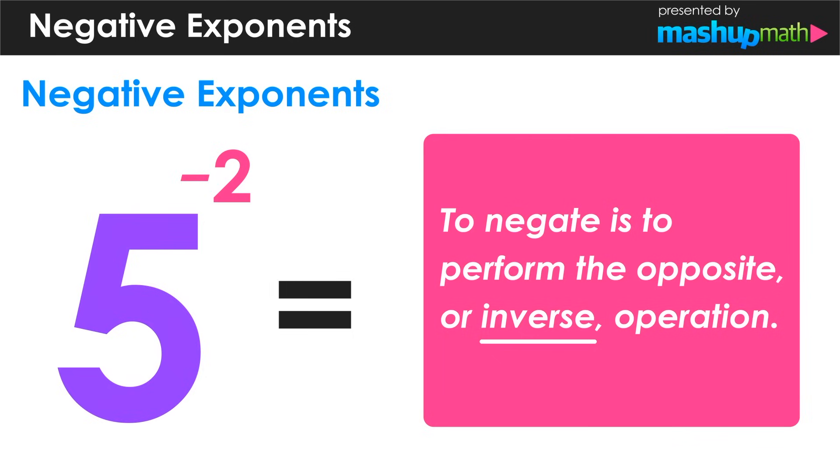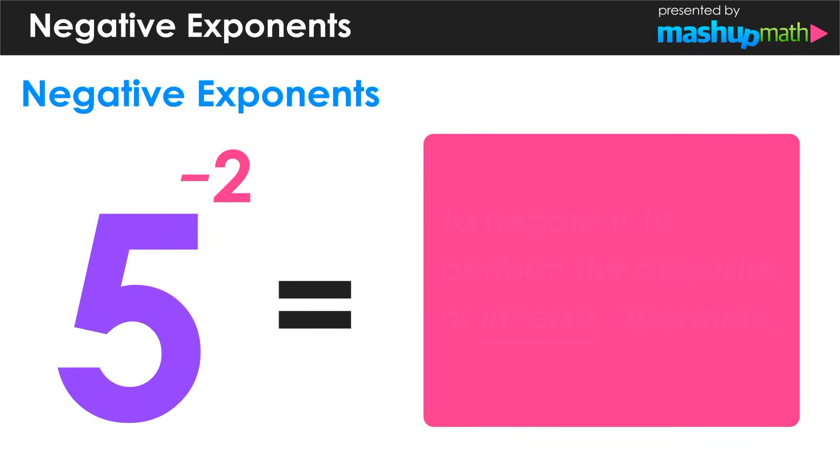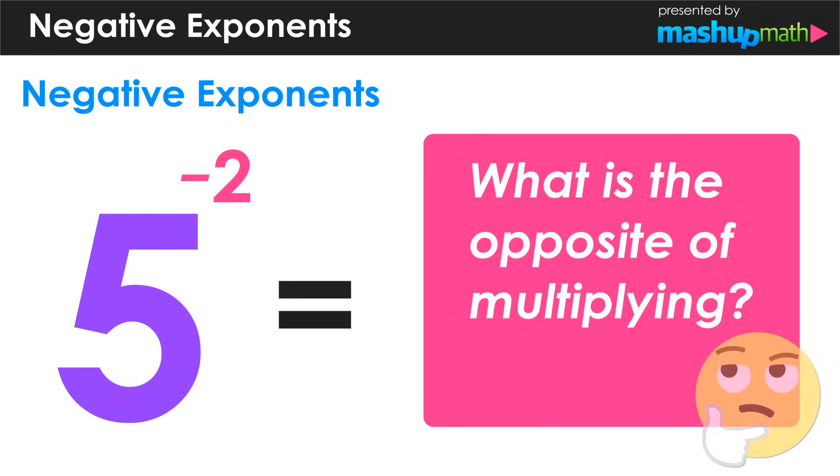So with positive exponents, our operation is multiplication. So what is the inverse or opposite of multiplying?